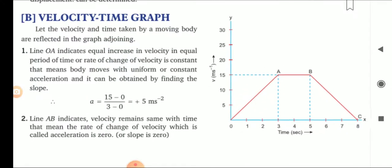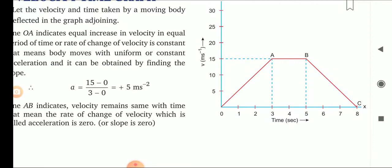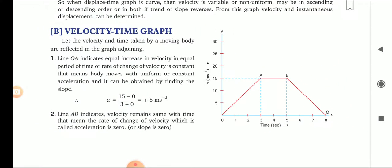In this particular figure, you see there is one rectangle and two triangles. If altogether we are able to determine the area of these three figures — the rectangle area is length into breadth, that is 15 into 2. Then we determine the area of the triangles: half into base into height, that is half into 15 into 3, and the second one is also half into 15 into 3. We add these areas, and that gives the displacement covered.